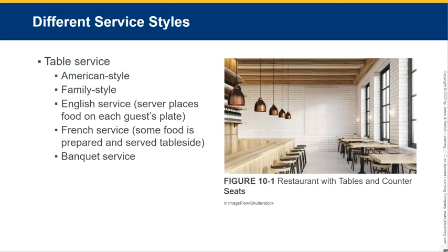One type of table service would be American style. This is when food is arranged on plates in the kitchen and then placed in front of each guest. Another style of table service is called family style service. This is when large serving platters and bowls of food are placed on the guest table and passed around for diners to serve themselves.